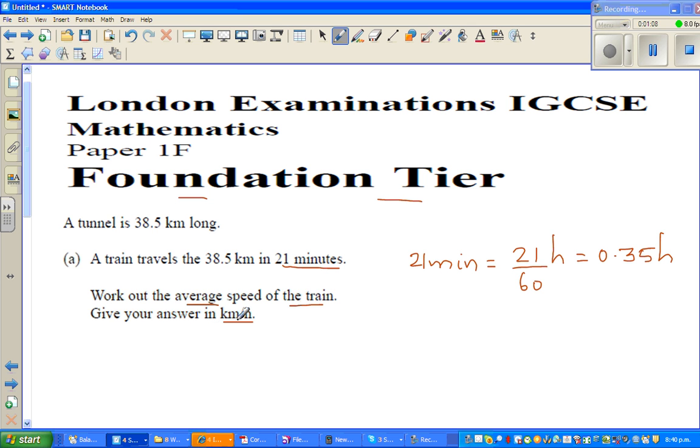If you want to write the average speed, speed is distance over time. So now distance is in kilometers, that is 38.5 km. It's always good to write the unit over time.